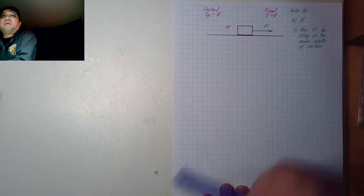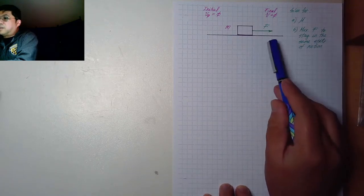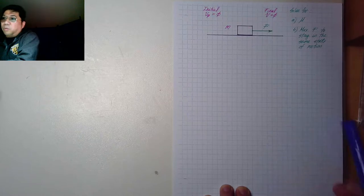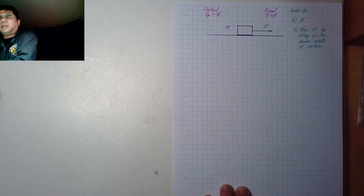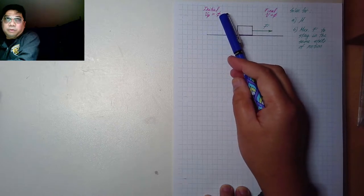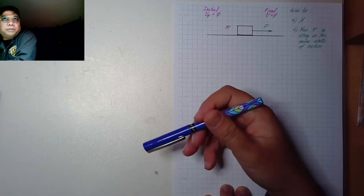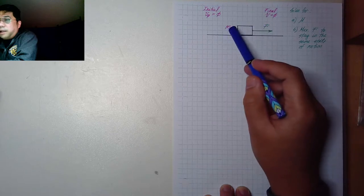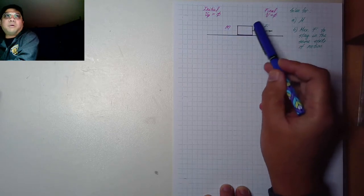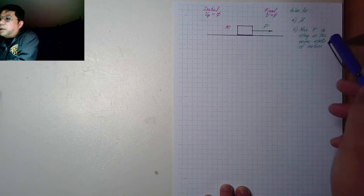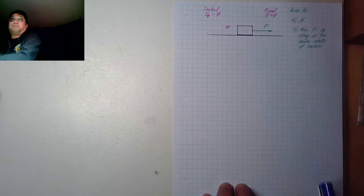We need to find mu, the coefficient of friction, and the maximum force so that our block will stay at the same state of motion. Same state of motion means that whatever the initial condition is, it should be the same final condition. In this case, the initial velocity is zero — it's not moving — and it's still not moving after applying force F. If the block has a mass of m, what would be the maximum amount of force required?